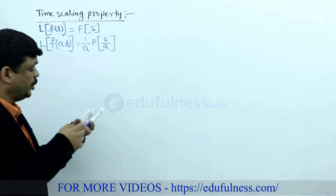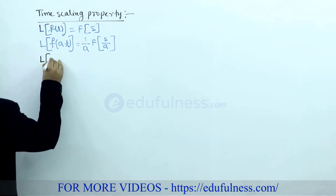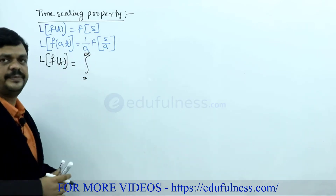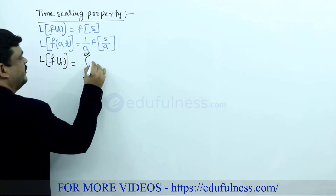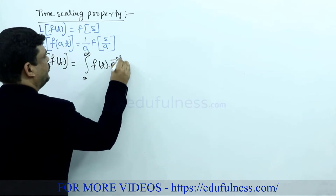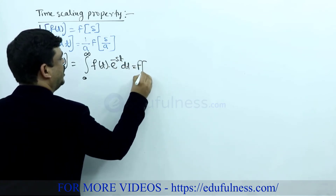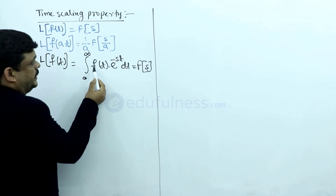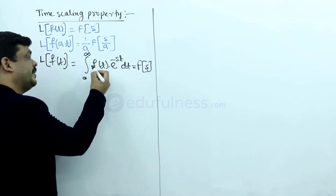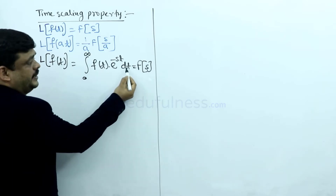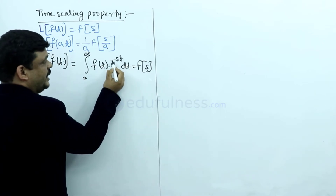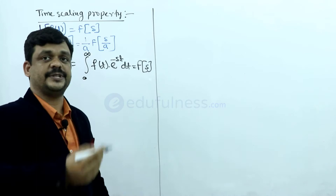Now we have to prove this. To prove it, I am taking the standard Laplace transform equation: Laplace transform of f(t) is integration from 0 to infinity of f(t) · e^(−st) dt. I am directly taking the unilateral Laplace transform. This integration with respect to t gives F(s), where the function is in terms of t and the exponential e^(−st) involves s multiplied by −t.